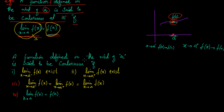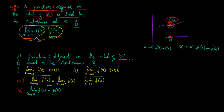So for the function f to be continuous at a point a, where this function has to be defined in the neighborhood of a including at a, it is said to be continuous if the left-hand limit and the right-hand limit are both existing and are equal, and then the overall limit is equal to f(a). All four conditions must be satisfied.